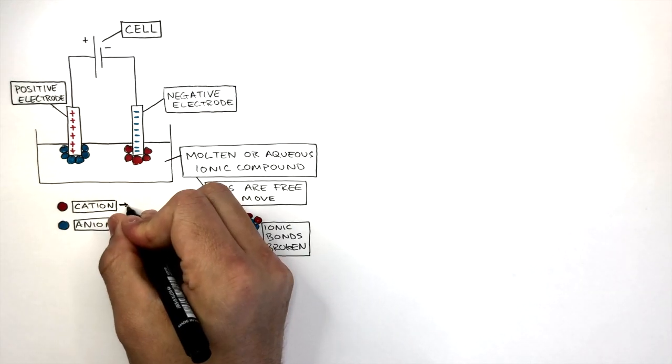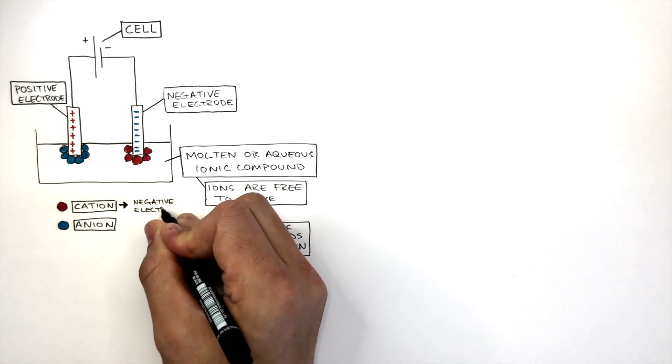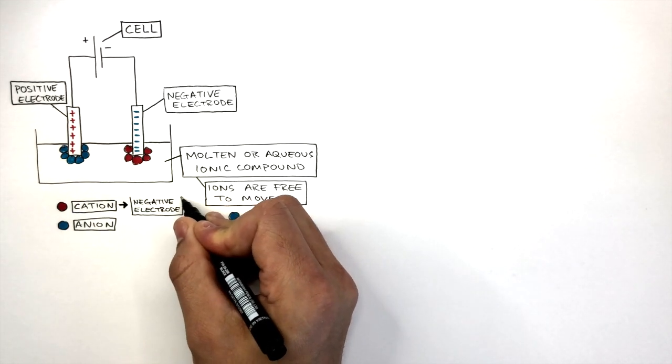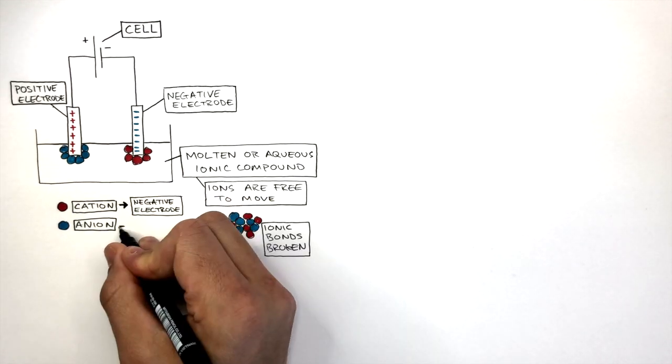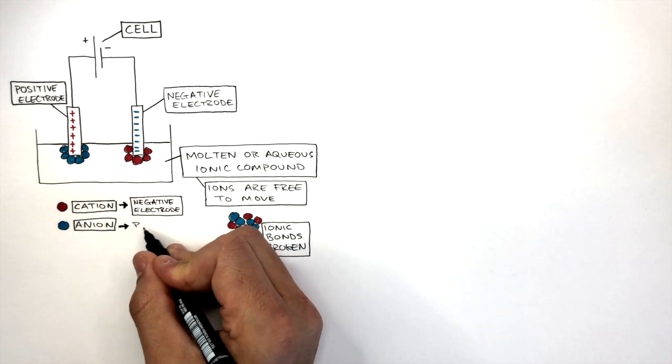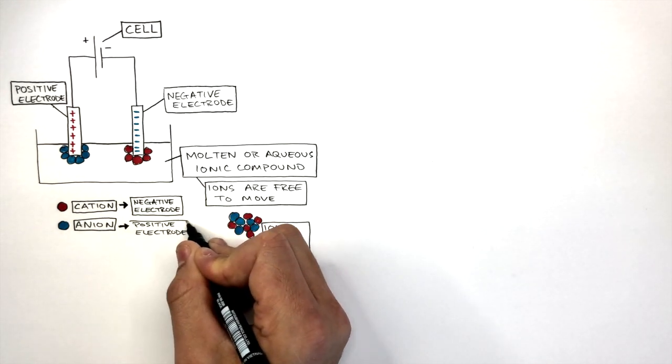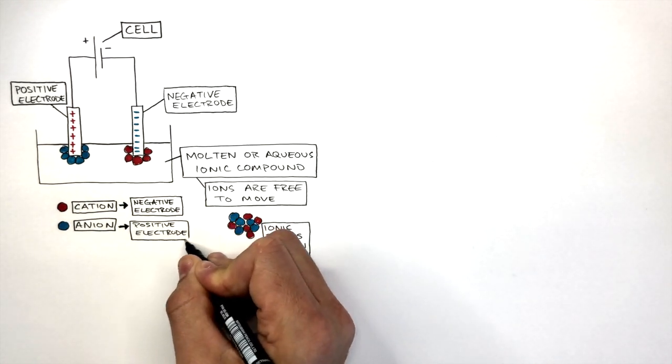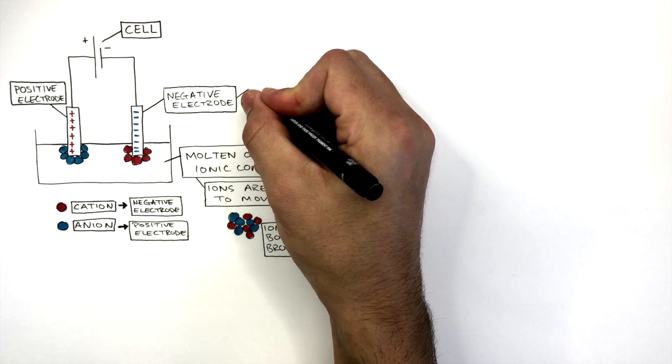The cations are attracted to the negative electrode allowing the electricity to flow, and the anions are attracted to the positive electrode also allowing the electricity to flow. These electrodes have special names.